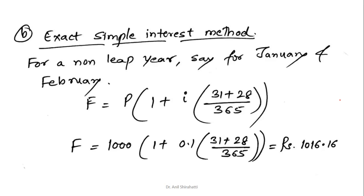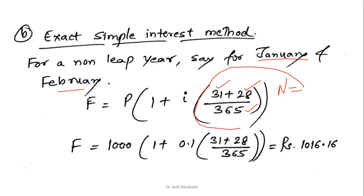Now using the exact method — for a non-leap year, let's say we are calculating the interest for January and February. January has 31 days, February has 28 days, and total number of days in the year are 365. So N equals (31 + 28) / 365. With P = 1000 and i = 0.1, if I calculate this, I get approximately the same answer — that is Rs. 1016.16. So this is how you calculate simple interest.